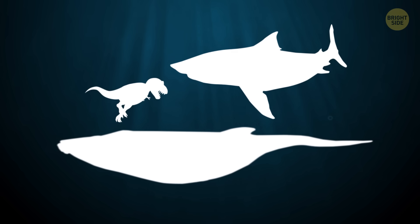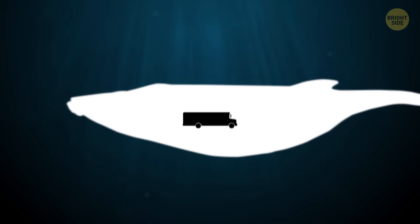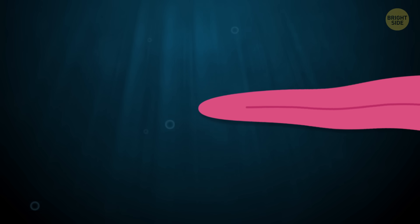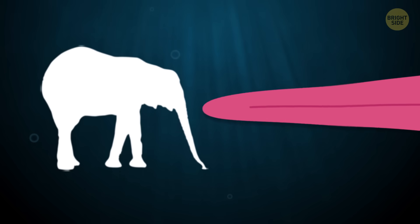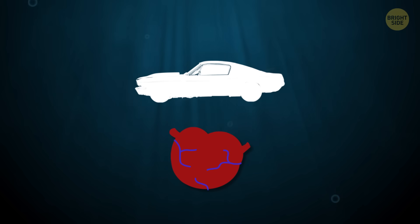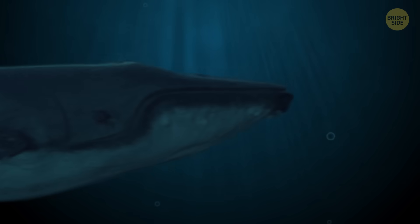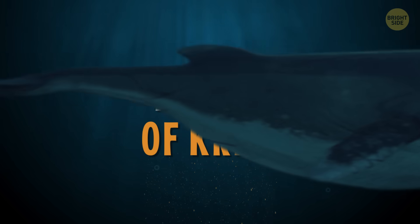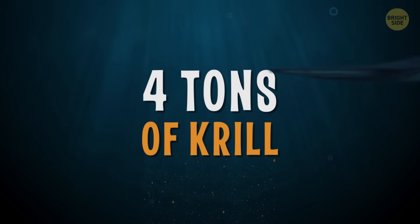If you were to put a blue whale next to a school bus, it would look like it could swallow it. Think about that. According to National Geographic, a blue whale's tongue can weigh the same as an elephant, and their hearts can weigh as much as a car. That doesn't even sound possible. It's no wonder these giants need to eat about 4 tons of krill every day.